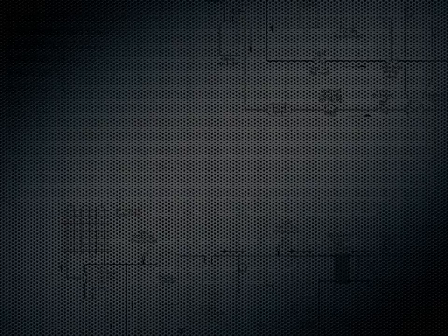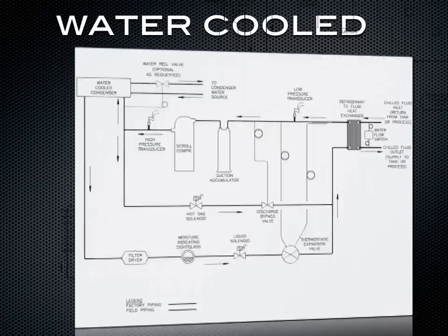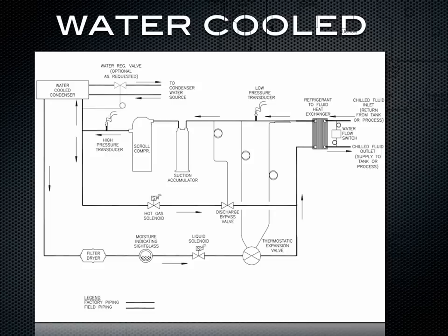Let's go over the water-cooled refrigeration system diagram. The first thing you're going to notice is it looks almost identical to an air-cooled chiller. The difference is where the heat is rejected through the condensers. On an air-cooled chiller, the heat is rejected through fans out to the atmosphere. On a water-cooled chiller, the heat is rejected to a cooling tower, building water, or some use geothermal.